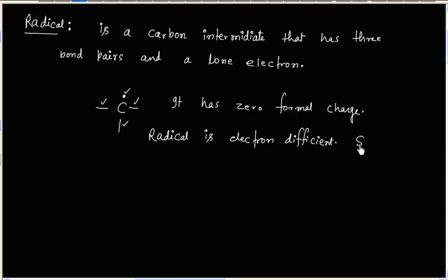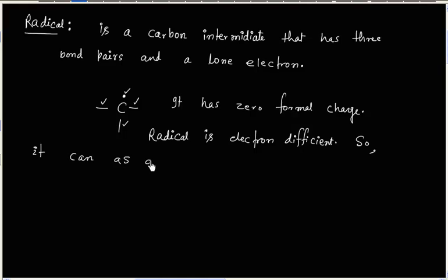Like carbocation, radical will act as an electrophile because it is electron deficient.